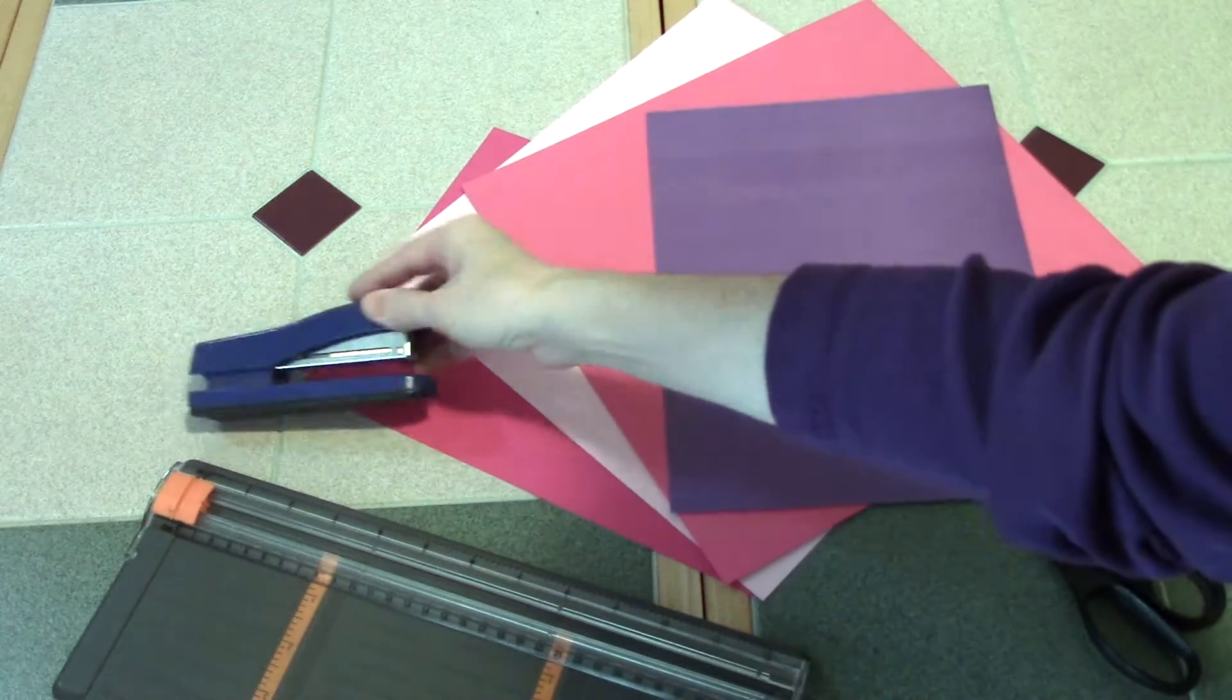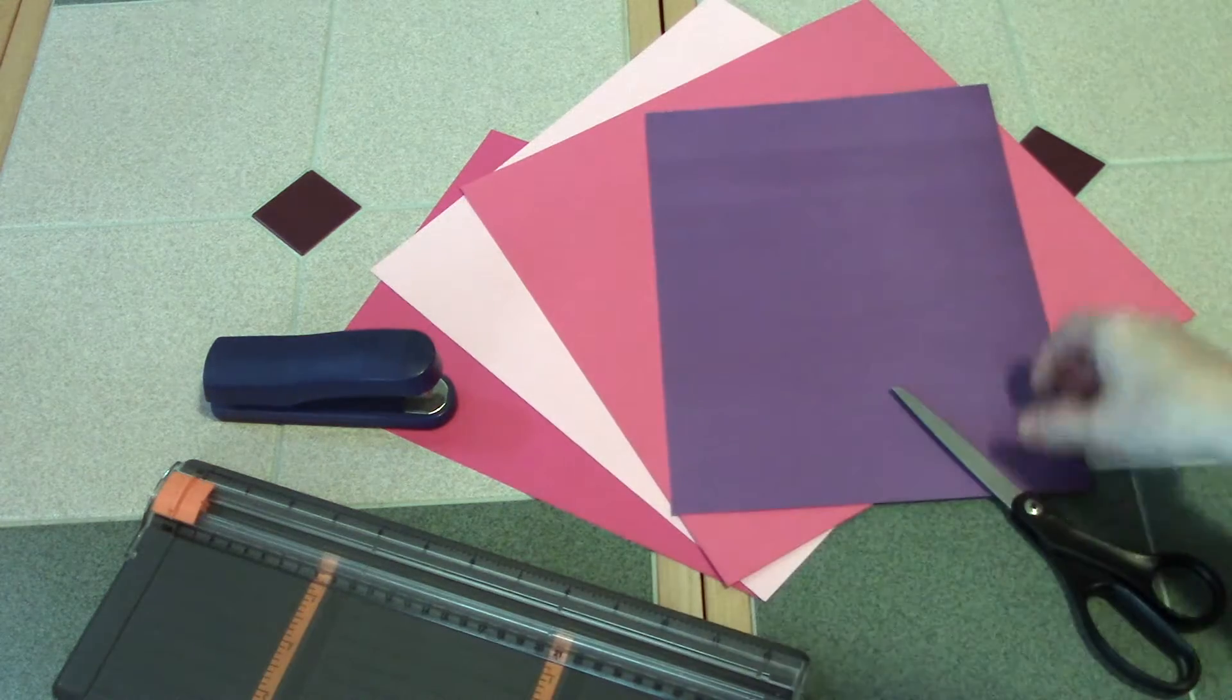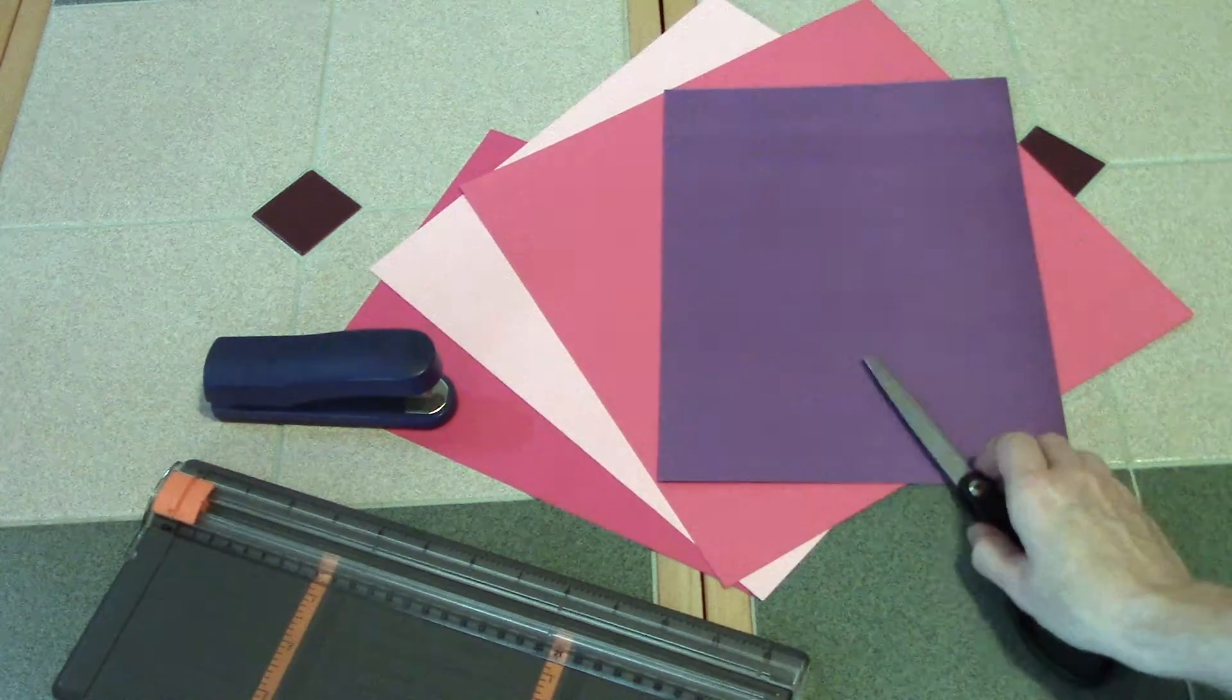For the paper strip hearts, I used a paper cutter, stapler, different colors of paper, one is cardstock, and some scissors.